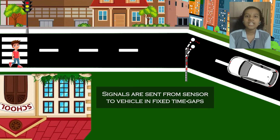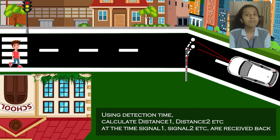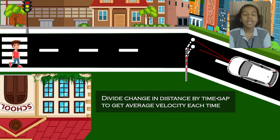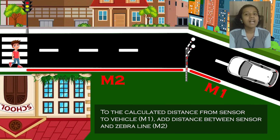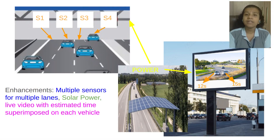Now that we have demonstrated the basic concept of estimating time taken by a moving object to reach a point, we can use this to implement a customized solution on the road. In the case of a curved road, the sensor will have to be placed at a height above the road, and the calculations will accordingly change based on the angle as well as the distance from sensor to the pedestrian. With some fine tuning of this idea, the cases of multiple lanes and multiple vehicles can be addressed.